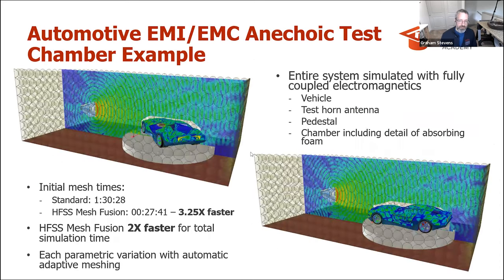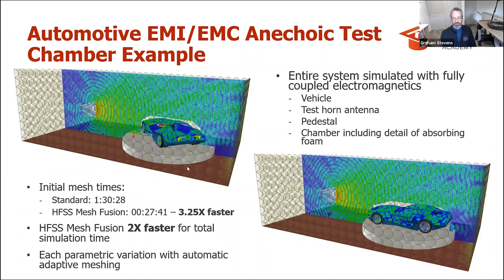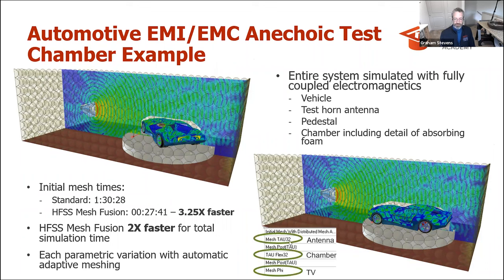A second example of mesh fusion is an entire system with a vehicle test horn antenna, the pedestal, a chamber including absorbing foam. We have lots of different scales: the horn and its feed system, the absorbing foam, and the car — all in the test chamber. This allows you to combine the most appropriate meshing for the car versus the foam. We're using tau for the antenna, tau flex for the chamber, and FEE mesh for the vehicle.